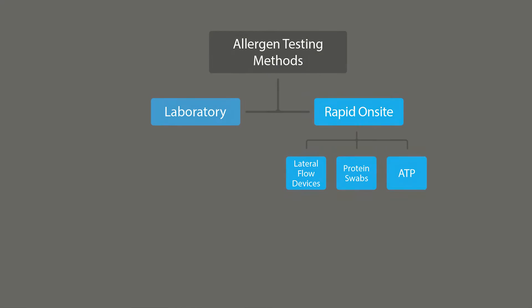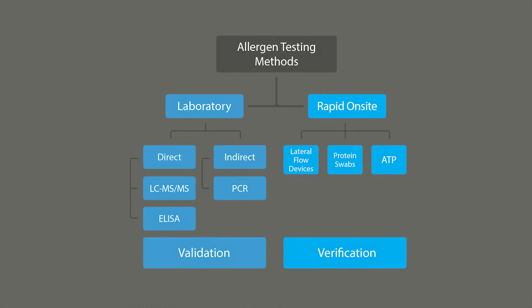Third, ATP swabs detect adenosine triphosphate — the energy currency of cells — on surfaces and in rinse water. They are not allergen-specific, so it is important to understand how ATP results correlate with the presence of allergen residue in your specific set of circumstances. This can be established during your allergen cleaning validation study.